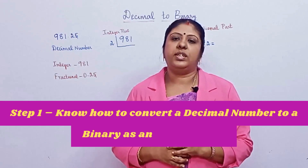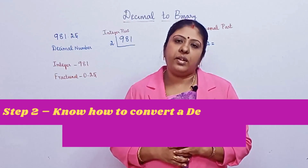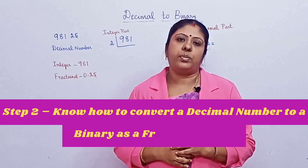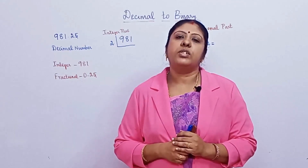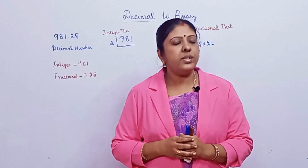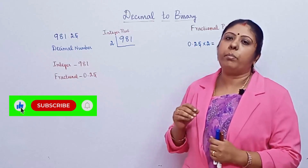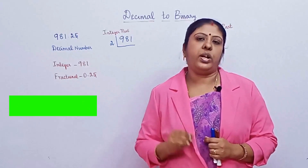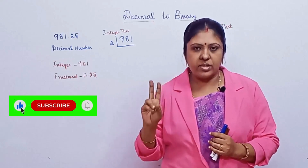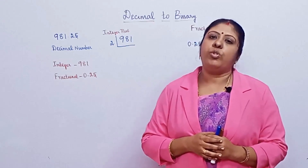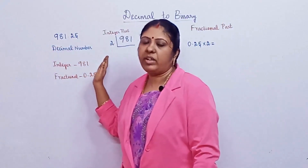First, you want to know how to convert a decimal to binary as an integer part. In step two, you want to know how to convert the fractional part of a decimal to a binary number. These two methods are different. We all know that the decimal system consists of a base 10 number system with digits from 0 to 9, and in binary it consists of base 2 with only two digits: zeros and ones.